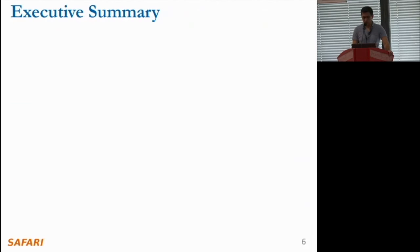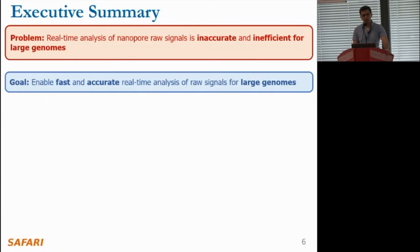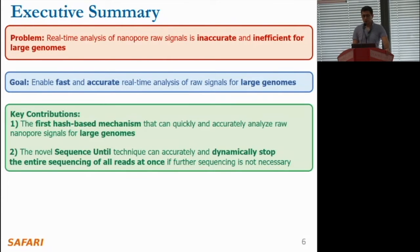Here is an executive summary of our work. Real-time analysis of raw nanopore signals lacks necessary accuracy and speed for large genomes, hindering us from fully exploiting the potential of nanopore sequencing. Our goal is to enable fast and accurate real-time analysis of raw nanopore signals for large genomes. To this end, we make two key contributions. First, we introduce the first hash-based mechanism for quick and accurate real-time analysis of raw nanopore signals for large genomes.